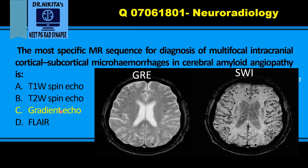So, if in the options gradient echo and SWI both are there, the better answer would be SWI — that is susceptibility weighted imaging. Remember that for hemorrhage anywhere, in amyloid angiopathy or hypertensive angiopathy or any hemorrhage, the sequences to know are GRE and SWI.